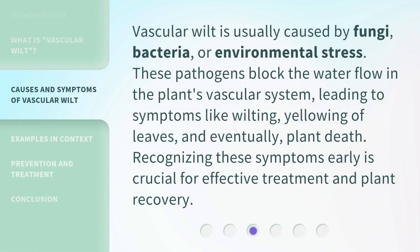Vascular Wilt is usually caused by fungi, bacteria, or environmental stress. These pathogens block the water flow in the plant's vascular system, leading to symptoms like wilting, yellowing of leaves, and eventually plant death. Recognizing these symptoms early is crucial for effective treatment and plant recovery.